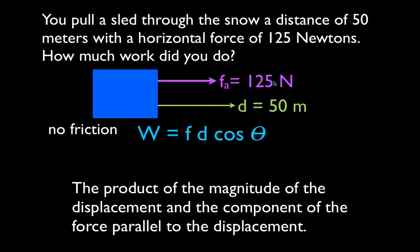The equation for work is the force times distance times the cosine of theta. Well, what is theta? Theta is the angle between the force and the displacement. Now you can see in this case, the force and the displacement are parallel to each other, and not only are they parallel to each other, but they are in the same direction.